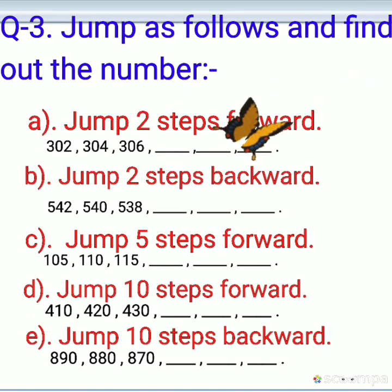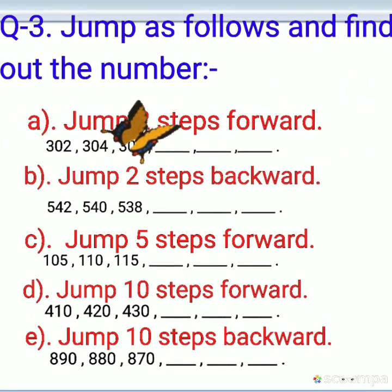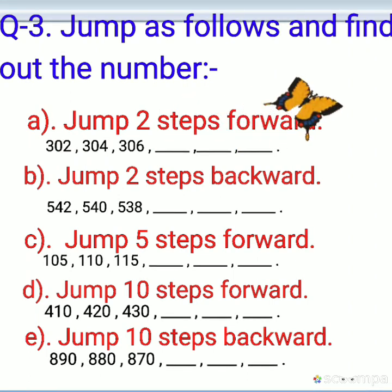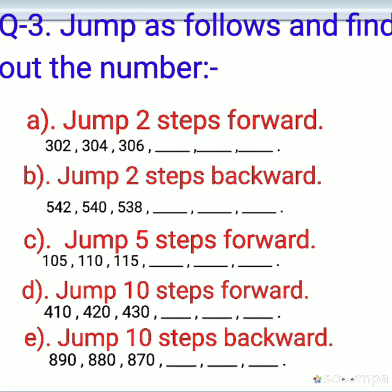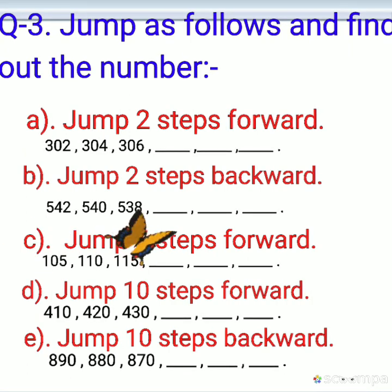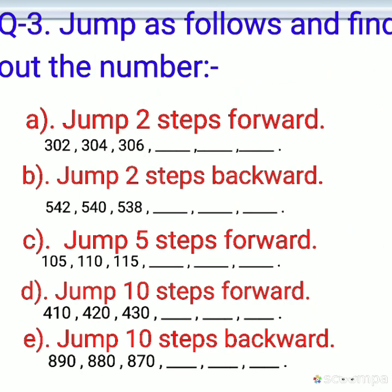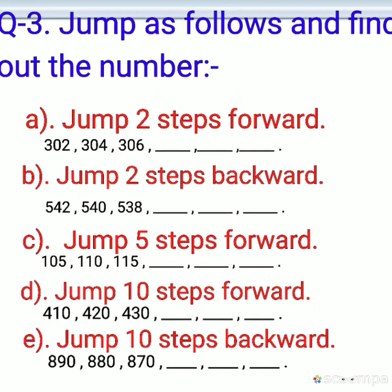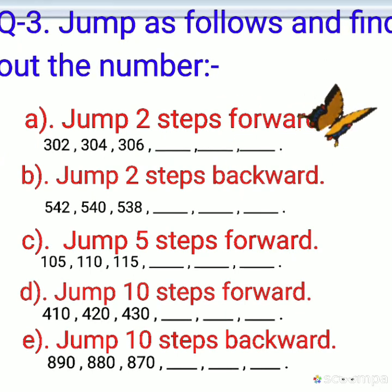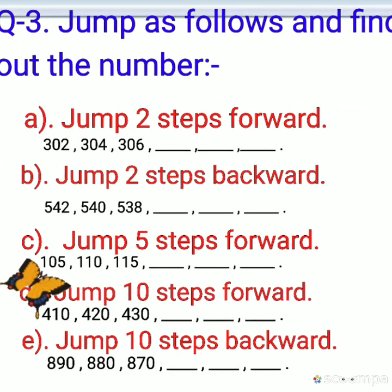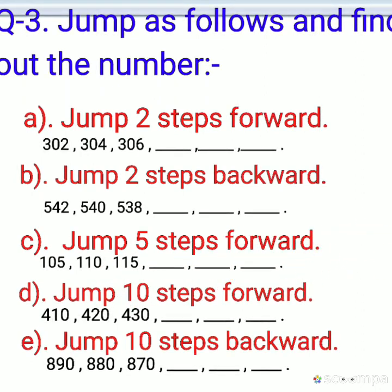For example, 302. After 302, without skipping, which number comes? 303. That is the first number after 302. What is the second number? 304. So you will not write 303. You will write 304. Like this, when you will move two steps forward, which number will come? 306. Like this, continue the pattern.